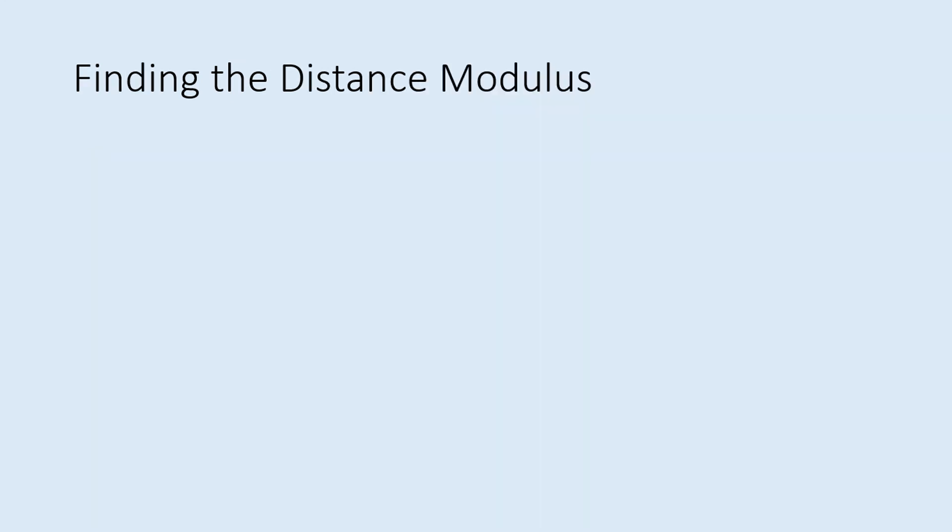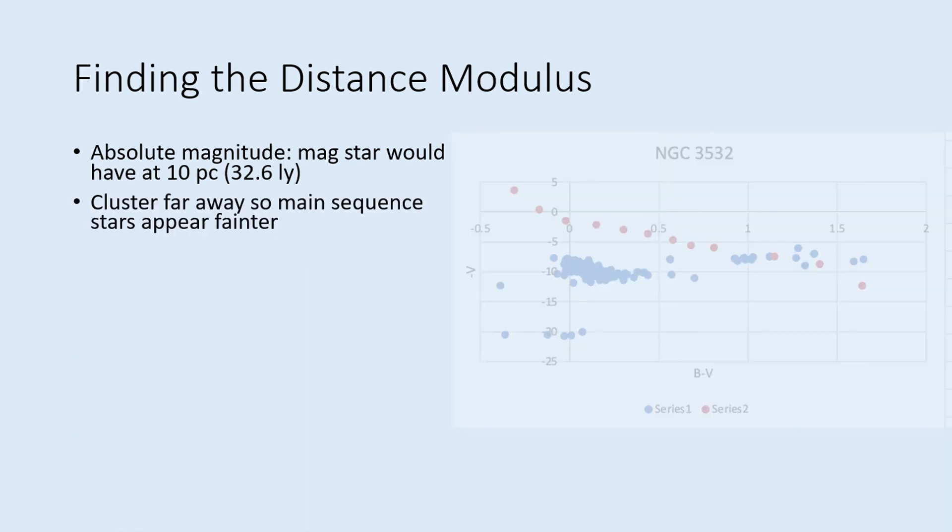In the next step, we're going to start working on an estimate of how far away this cluster is. We can do this by comparing the cluster stars to the absolute magnitude data. Remember that absolute magnitude is defined as the magnitude a star would have if it were 10 parsecs, or 32.6 light years away. So if your cluster were 32.6 light years away, the main sequence of the cluster would line up on top of the absolute magnitude points. However, all of these clusters are more than 32.6 light years away, so the stars look fainter than their absolute magnitudes and appear lower on the diagram.